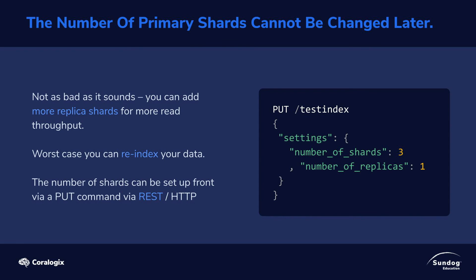We'll talk about how to plan for that more toward the end of the course. Here is what the syntax for creating an index looks like through a REST request — a PUT verb with the index name followed by a settings structure in JSON that defines the number of primary shards and the number of replicas. In this example, we're saying we want three primary shards and one replica. How many shards do we actually end up with? The answer is six: three primaries times one replica per primary gives three total replicas, plus the three original primaries, which gives us six. If we had two replicas, we'd end up with nine total shards — three primaries and six replicas to give us two replica shards for each primary shard.